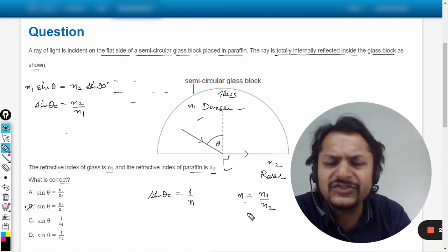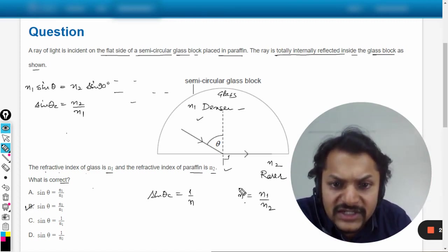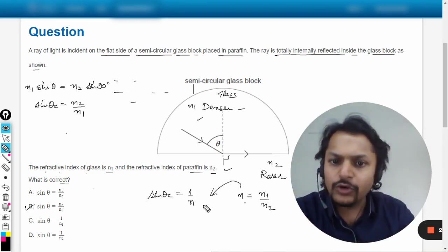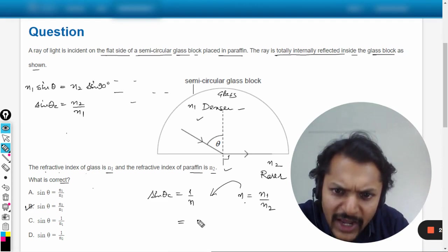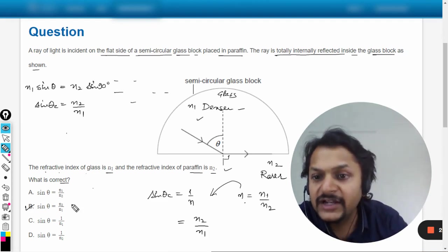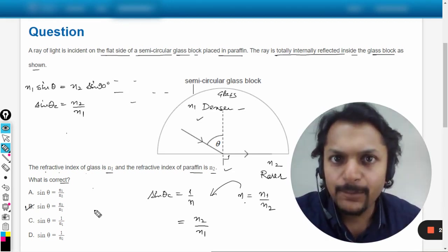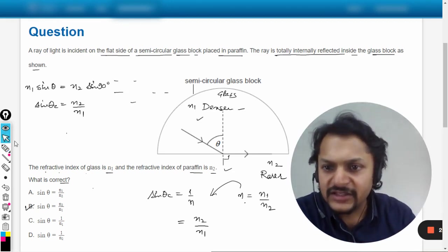So this can be directly substituted here. So what will be 1 by n? It would be reciprocal of it, and thereby you have this as n2 by n1 clearly. And so according to that also you are getting the same answer, that is B.